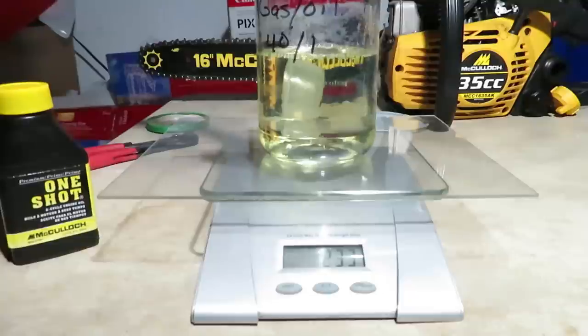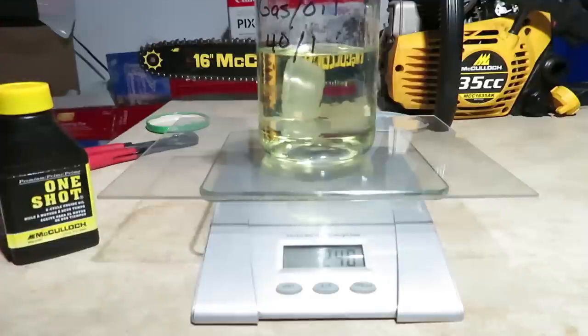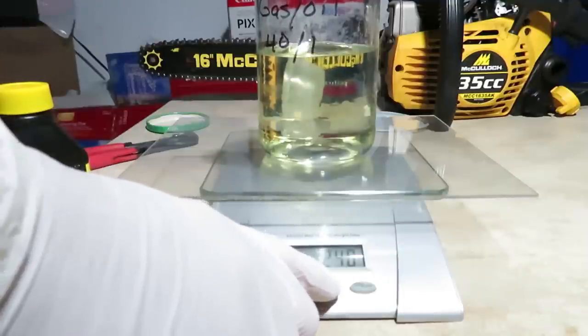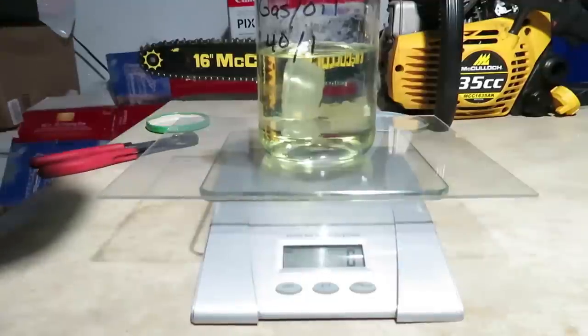Okay, we're getting close. We just need a few more drops. 237. That's good. 240. Now we're going to zero it out. 40 to 1 means 6 grams of oil.